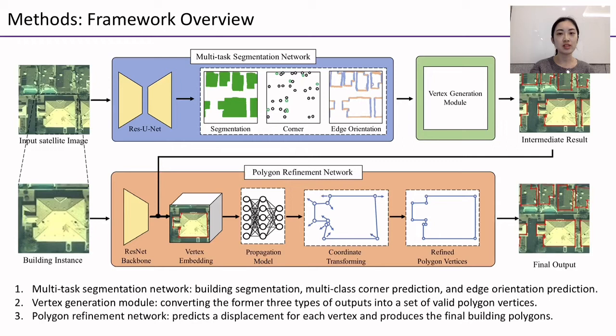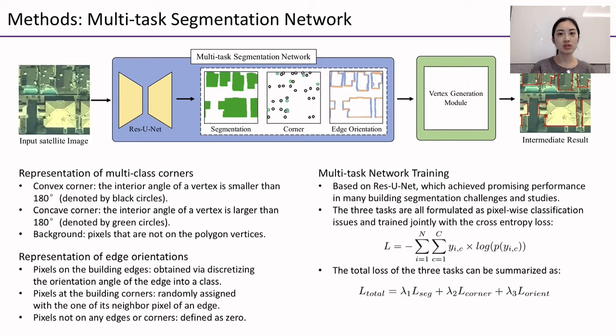In our multi-task segmentation network, we first introduce the representation of the two additional supervision types. For multi-class corners, if the interior angle of a vertex is smaller than 180 degrees, it will be defined as the convex corner type; otherwise, it will be defined as the concave corner type. The pixels not on polygon vertices are defined as the background type. For edge orientation, the orientation type of pixels on building edges is obtained by discretizing the orientation angle of the edge into a class.